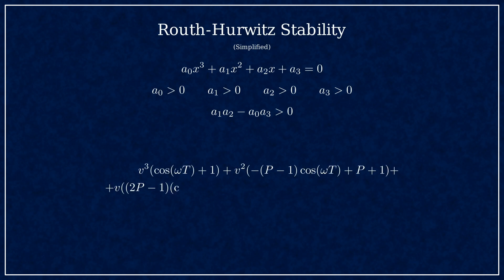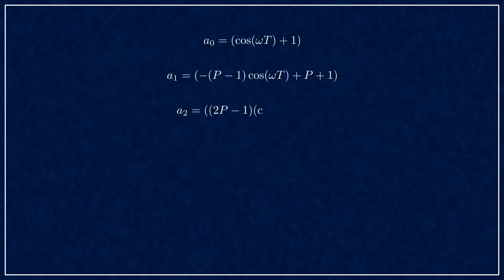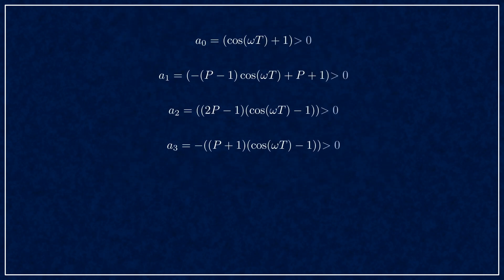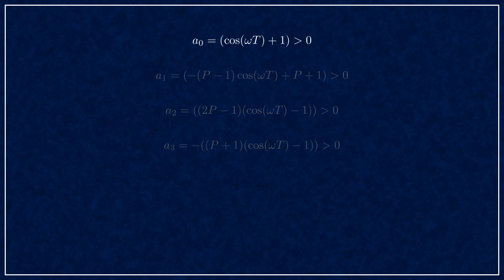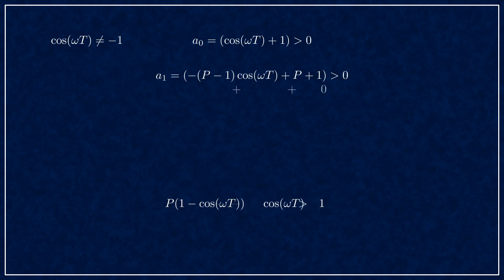So here's our polynomial in variable v, and here are the coefficients listed. The term a0 will always be larger than 0 except for the edge case where cos omega t is minus 1, so that's our first restriction. For the a1 term, it yields that p must be larger than cos plus 1 over cos minus 1. And also we need to avoid division by 0, so let's add that to the cos term above. Cosine omega t must not be plus minus 1.